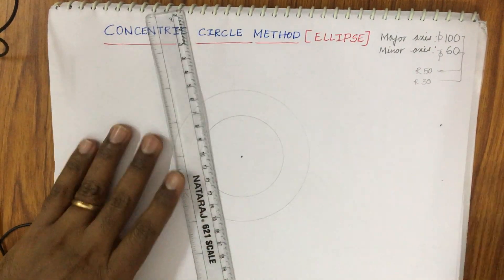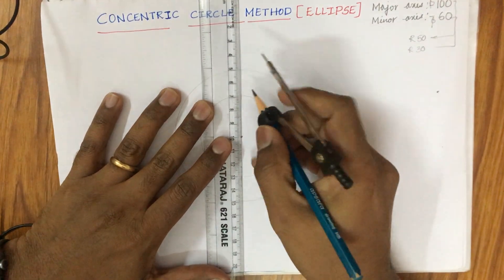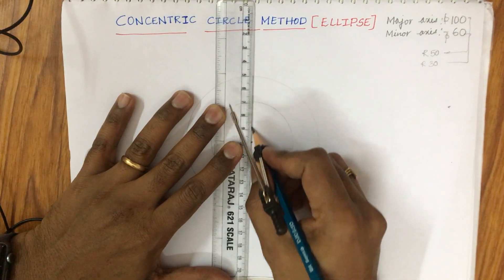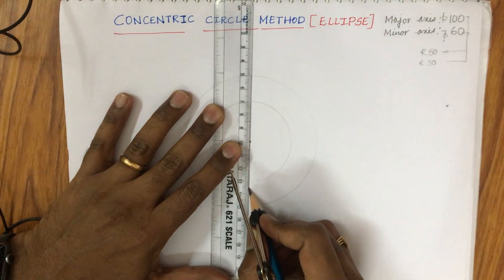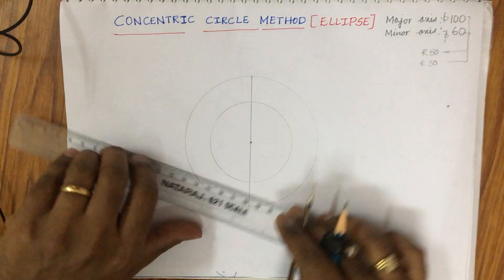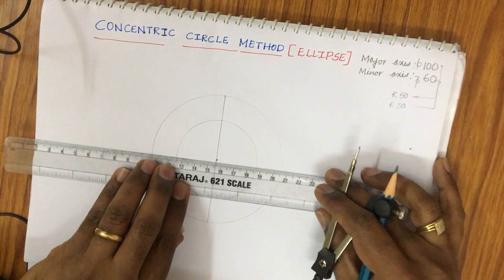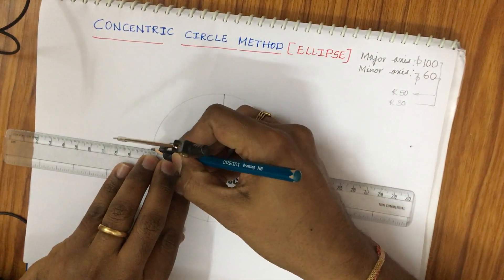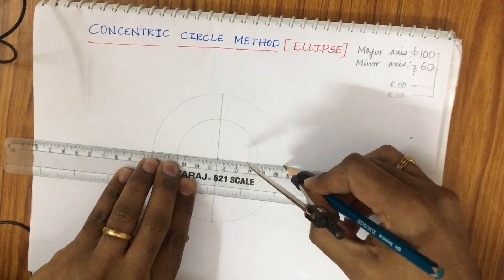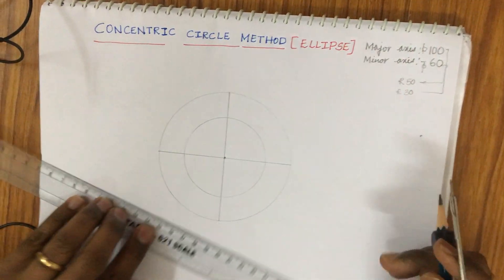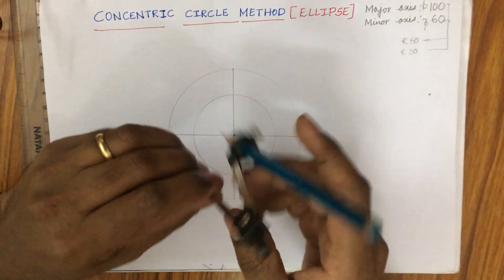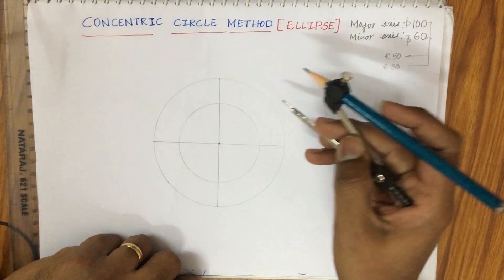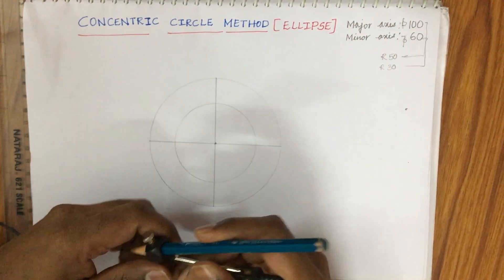Now you are supposed to divide these two circles into equal number of divisions in order to work out the construction process. First, I am going to divide it into four equal divisions. Dear students, please draw this vertical and horizontal line only using a drafter and do not do it with a plain scale. Now I want to divide the external circle into 12 equal divisions.